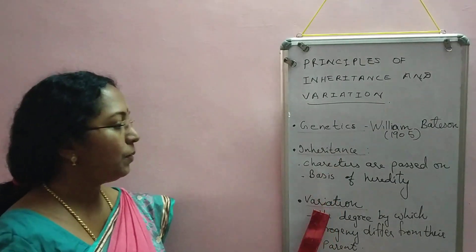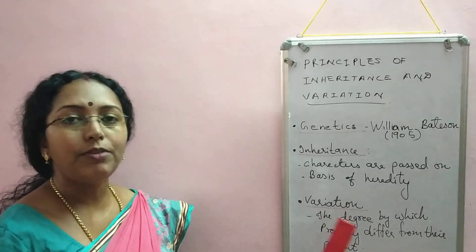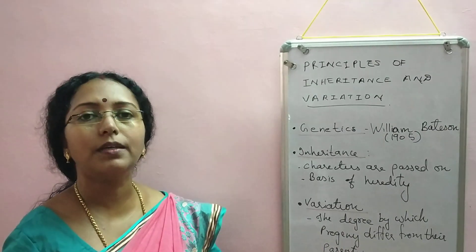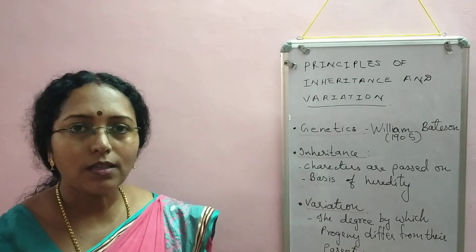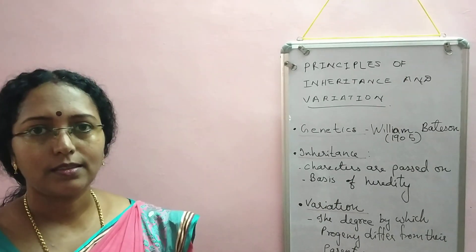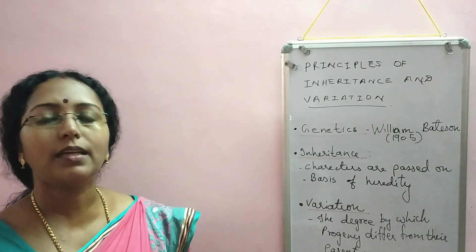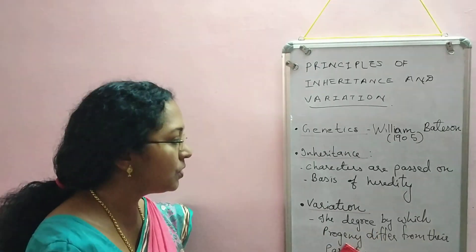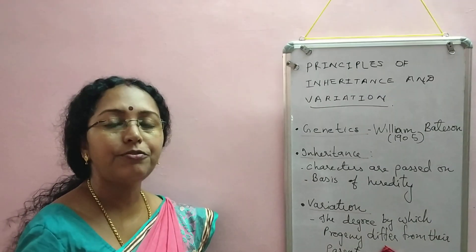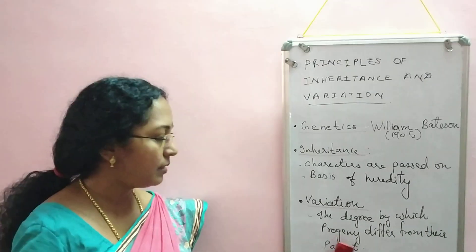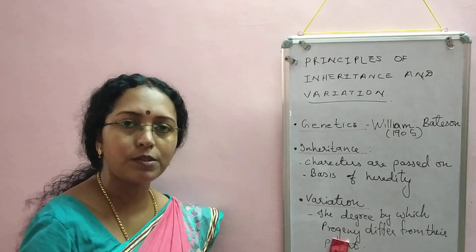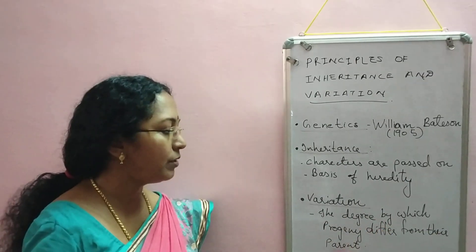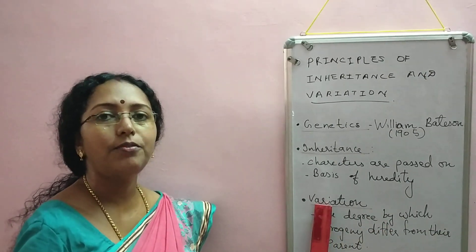Another term is variation. Even when characters are inherited — that is, passed on from parent to progeny — some variations may occur. That means some changes can happen. The degree by which progeny differ from their parent is called variation. Progeny means offspring, young ones.